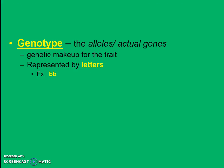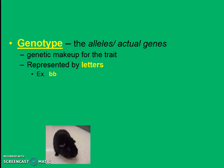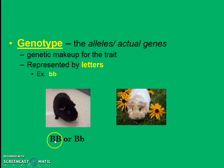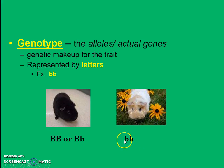Genotype refers to the actual alleles or actual genes. We represent genotype by letters. So my black fur guinea pig could be big B big B, or could be big B little b — homozygous or heterozygous — because both have at least one big B, which is dominant and will overshadow any recessive version. For my white guinea pig, there's only one option: little b little b, because as long as there's a big B it would look black. The only way to be recessive in appearance is to have two homozygous recessive alleles.